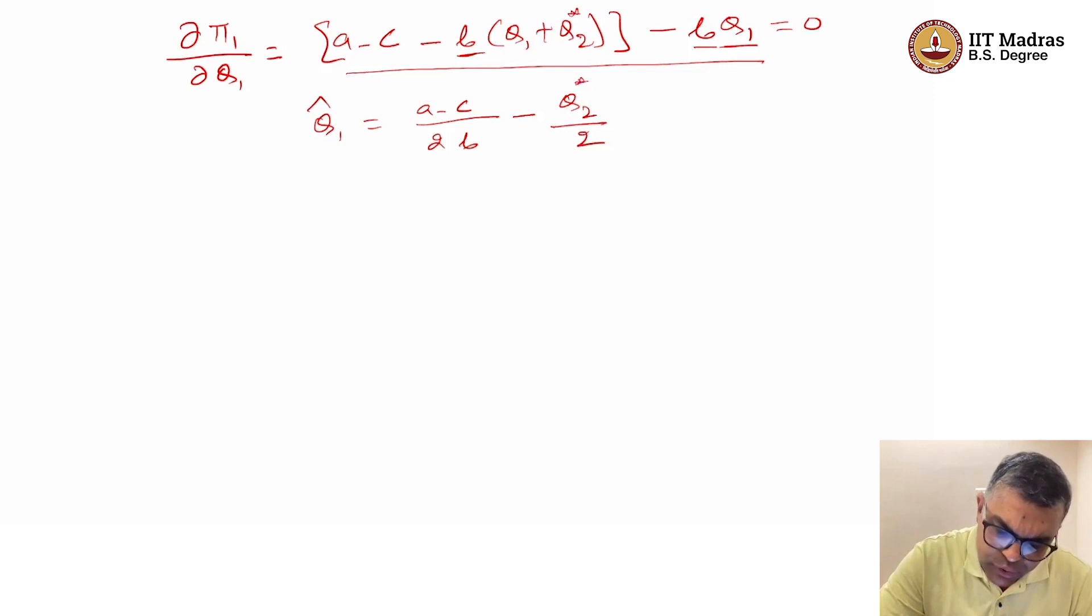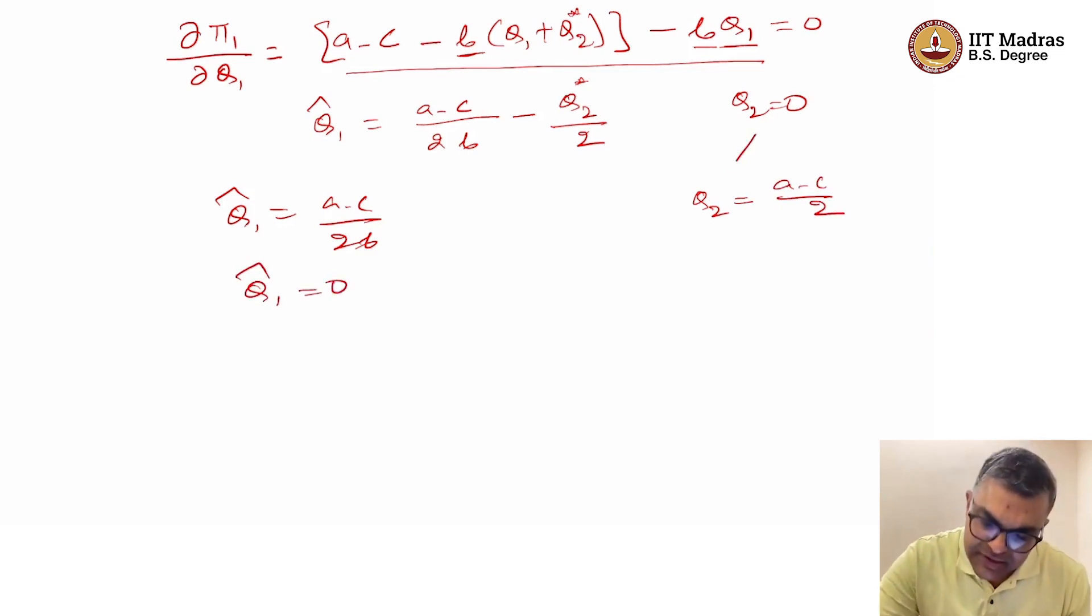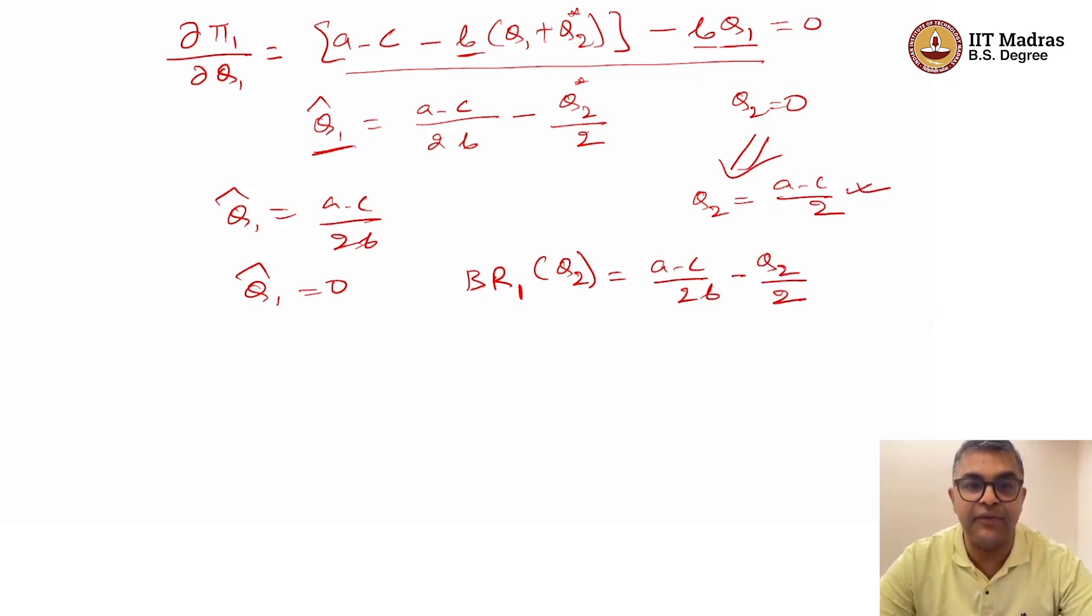The amount of Q1 that maximizes profit can be given by A minus C1 divided by 2B minus Q2 by 2. Firm 1 believes that if Q2 is equal to 0, then firm 1 should produce A minus C1 by 2B. If Q2 is A minus C1 by 2B, then Q1 hat goes to 0. As Q2 belief varies, the optimal amount of Q1 will also change. That is the best response of firm 1 given firm 2 is producing Q2. It is A minus C1 by 2B minus Q2 by 2.